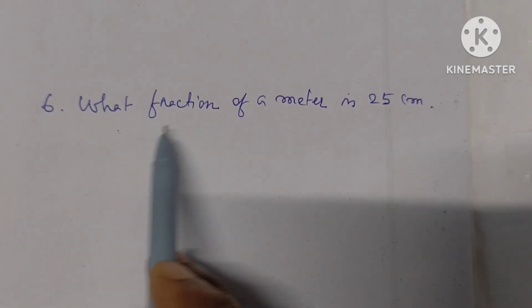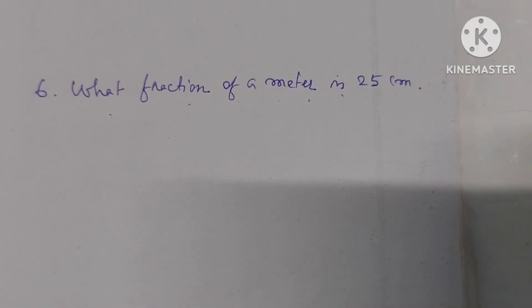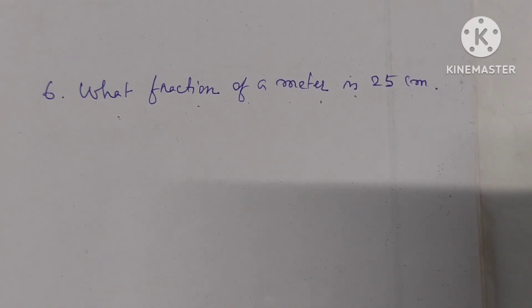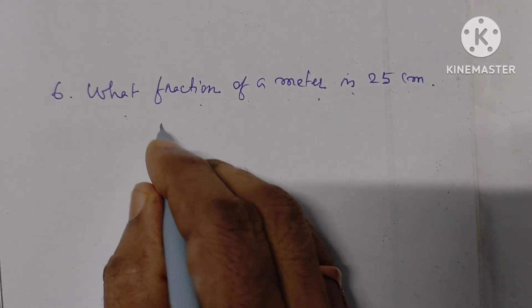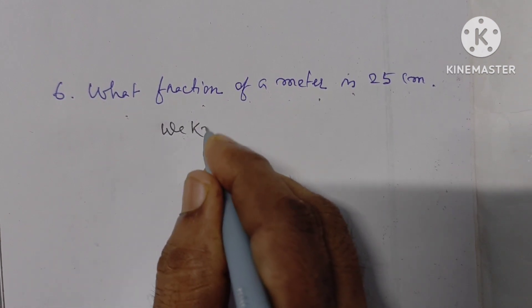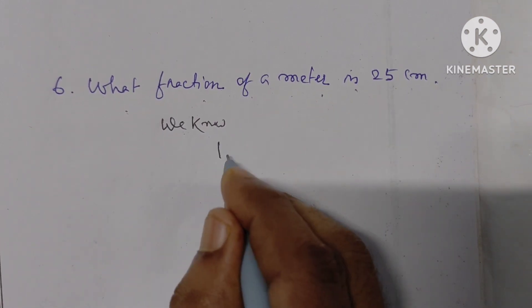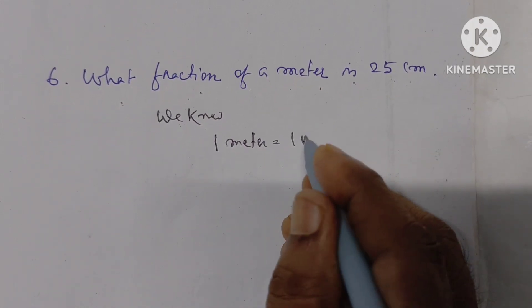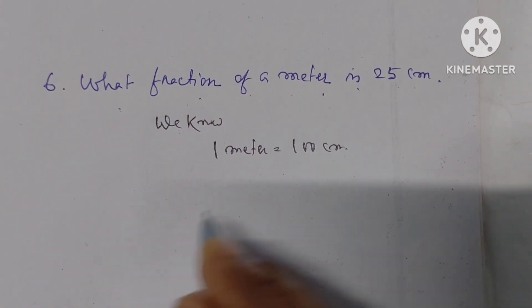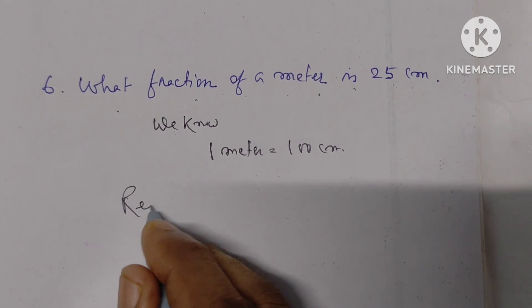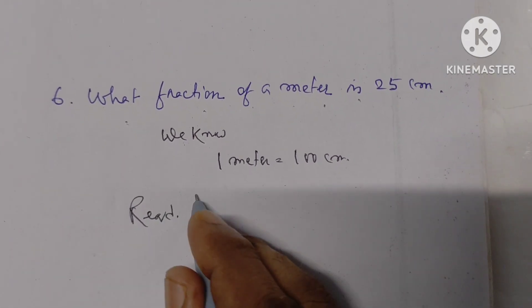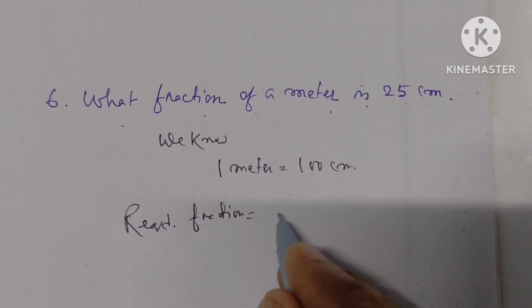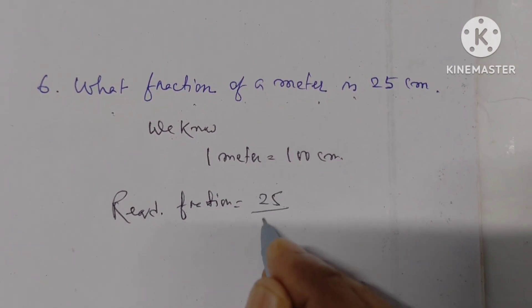Number 6: What fraction of a meter is 25 cm? 1 meter equals 100 cm. Therefore the required fraction is 25 by 100.